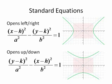Here we have the standard equations of a hyperbola. Notice that if the hyperbola opens left and right, the x squared term is positive and it comes first. Whereas if the hyperbola opens up and down, the y squared term is the one that's positive and it comes first.